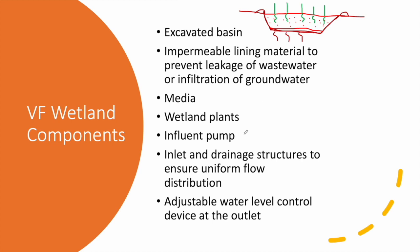Unlike the horizontal flow wetland where wastewater enters by gravity, in the vertical flow wetland we have to pump the wastewater. So we include a pumping chamber before the wetland. The wastewater is pumped into the wetland intermittently, around four to ten times a day, through a main distribution pipe with branched pipes that distribute the wastewater equally across the wetland.